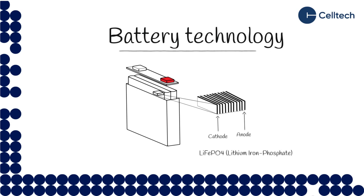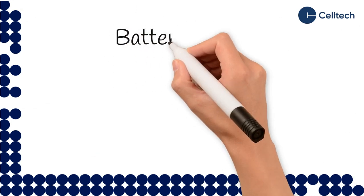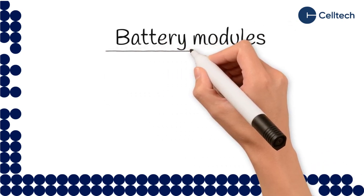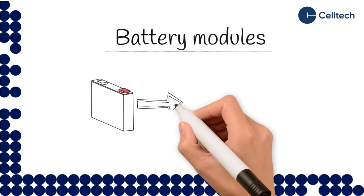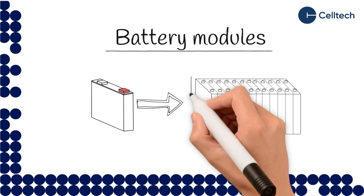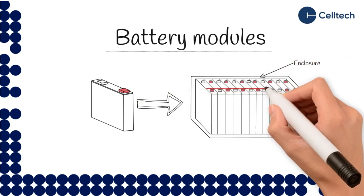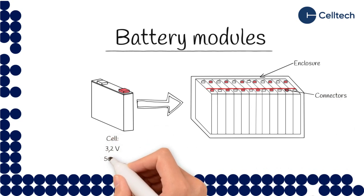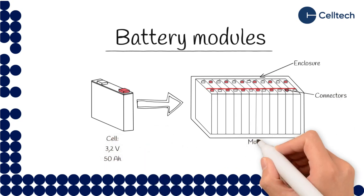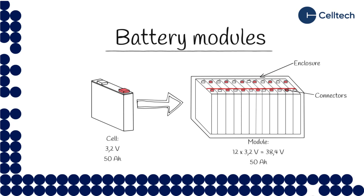For example, in LFP batteries the cathodes are made of lithium iron phosphate (LFP). When you pack several cells together you get a module. The cells are typically in a plastic, metal, or aluminium enclosure, connected with connectors inside the modules. The cells are connected in series or parallel to achieve the desired voltage and energy capacity.